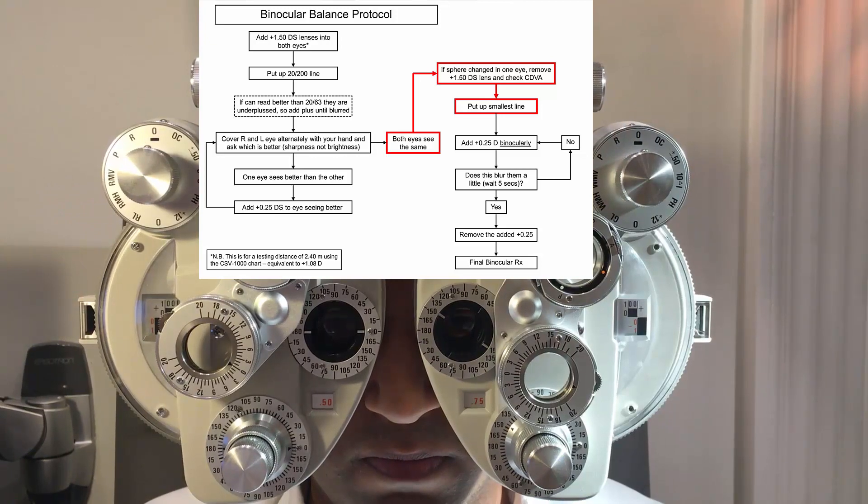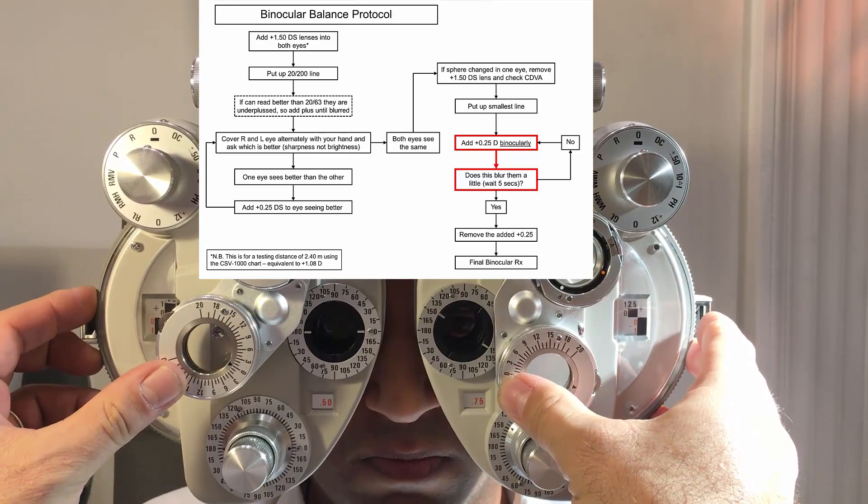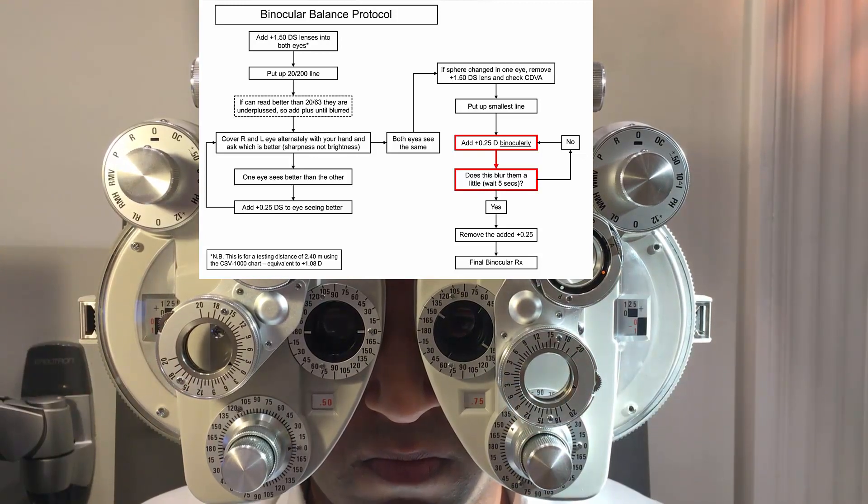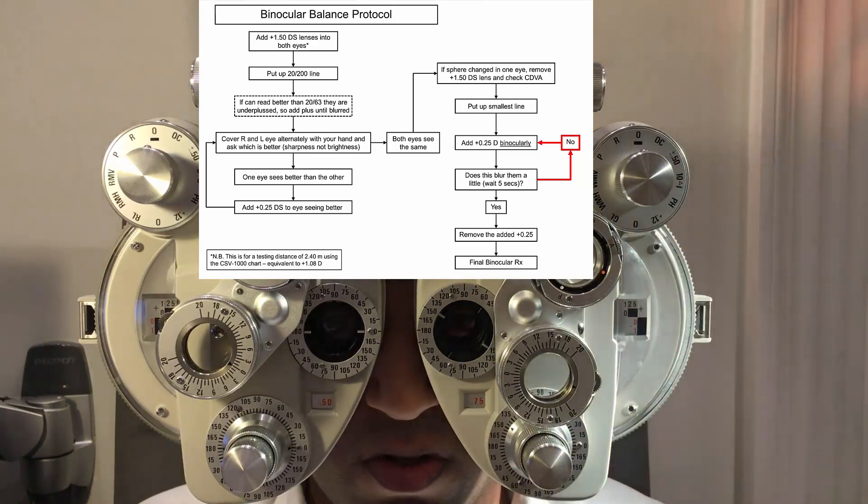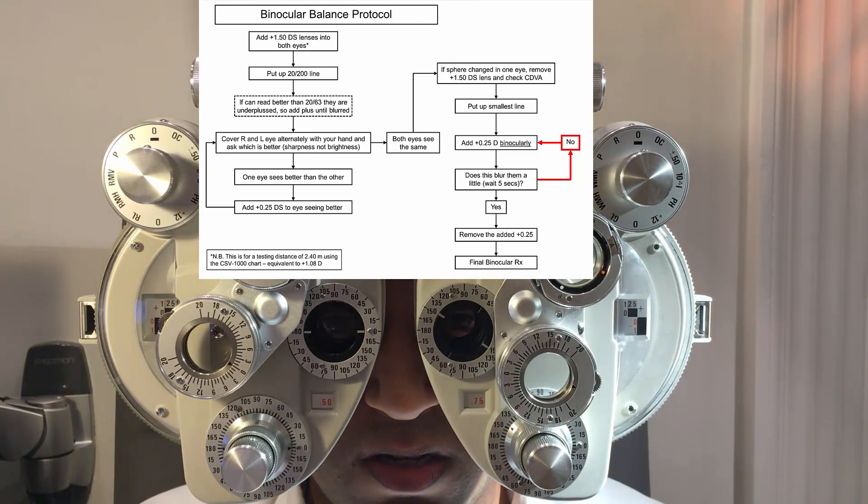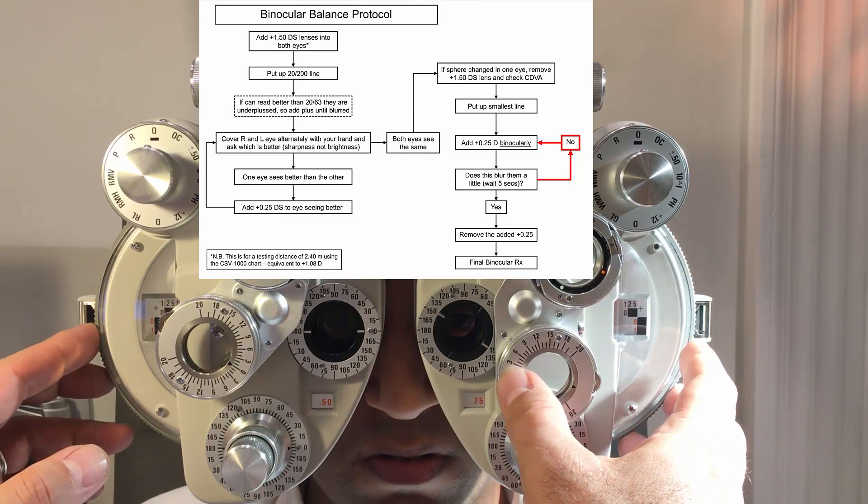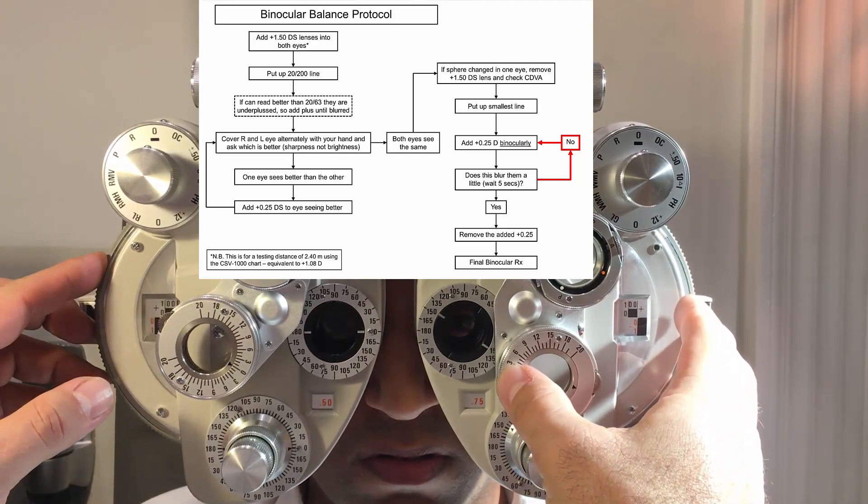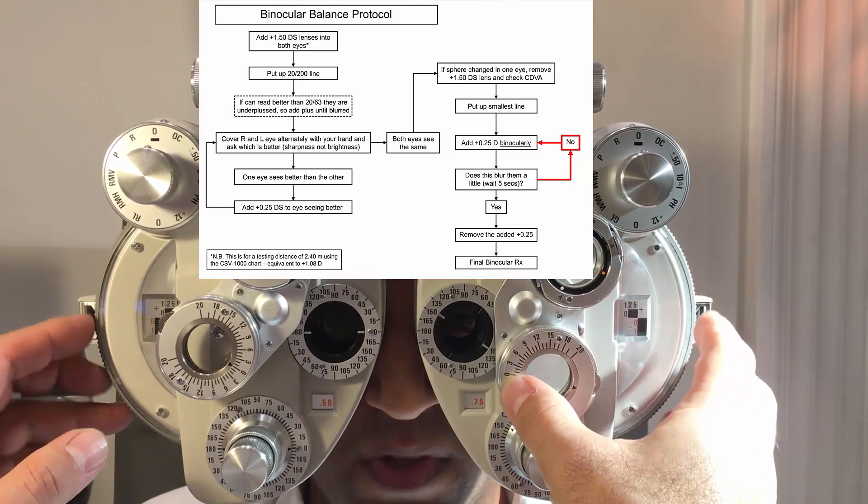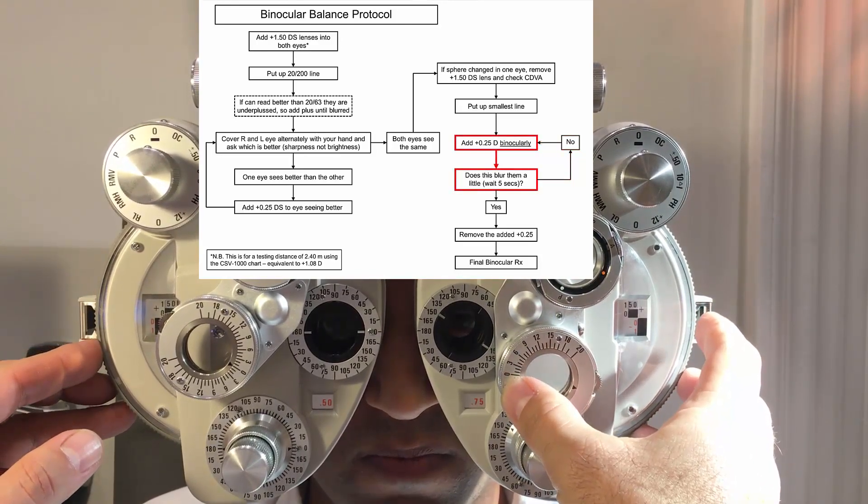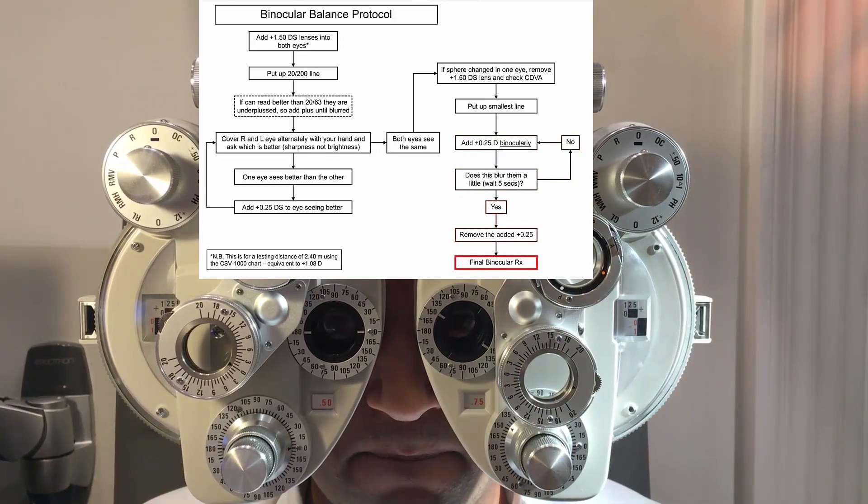And then looking here at the smaller ones. Does it blur them a little bit if I go to two there or not really? Not really. All right. What's the smallest you can see there? Okay. Super.